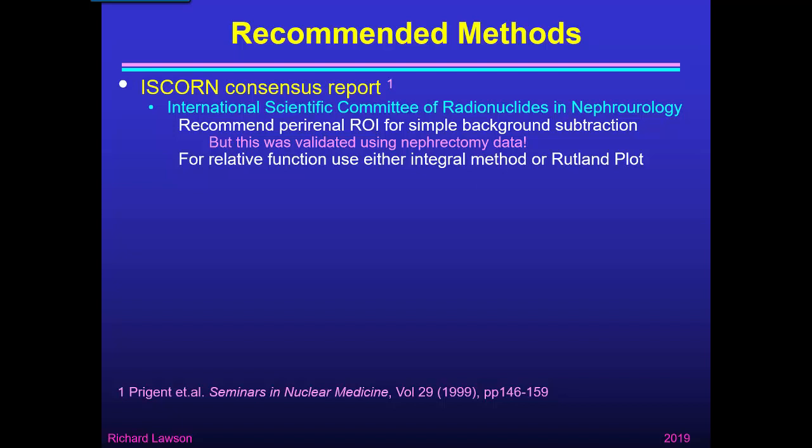However, as I pointed out in part 4, using nephrectomy data to validate a background subtraction technique isn't ideal, because when you perform a nephrectomy you remove the kidney along with all the blood background within the kidney itself. So a method that works for nephrectomy data is only shown to be good for removing the surrounding tissue and blood near the kidney, but it doesn't show that you can remove the blood background from within the kidney itself.